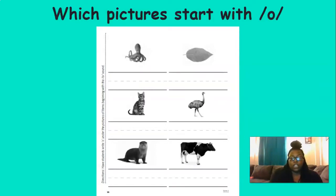Now, it's time to look at some pictures. We're going to figure out which pictures start with the ah sound. So, let's look at the first one. This is a picture of an octopus. Does octopus start with ah? Yes, it does. Let's put that ah sound under octopus. All right. The next one is leaf. Does leaf start with ah? No. So, we're not going to put the ah there. The next picture is of a cat. Does cat start with ah? No. So, we're not going to put the ah there. The next picture is of an ostrich. Ostrich. Does that start with ah? That's right. It does. Ostrich. So, let's put the ah sound.